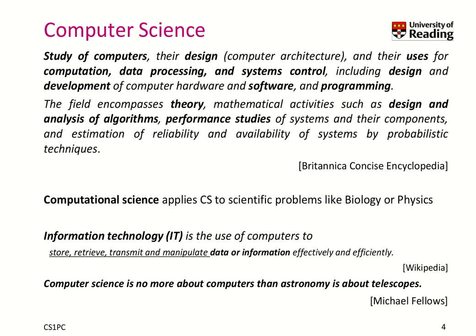To distinguish computer science from IT, I've added a couple of further terms. Computational science applies computer science to scientific problems like biology or physics — that's the boundary between science and application of computers for science. IT, or information technology, is about how to use a computer to store, retrieve, transmit, and manipulate data or information effectively and efficiently. That is more the practical usage, while computer science involves the design and theory of computers, as well as design and analysis of algorithms. Computational science is the boundary between computer science and application in scientific domains.